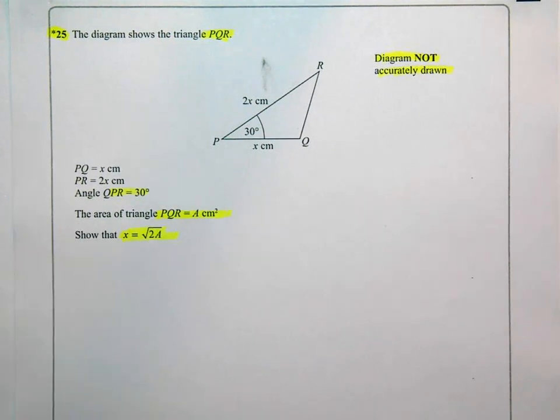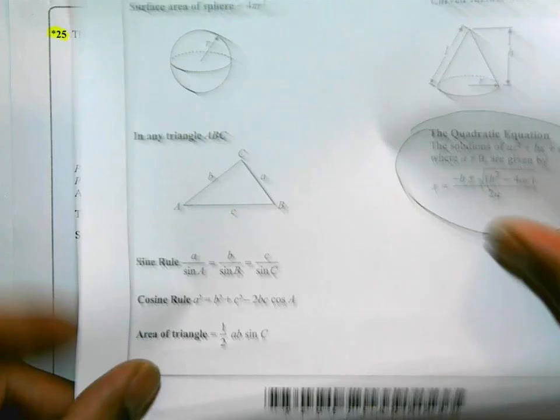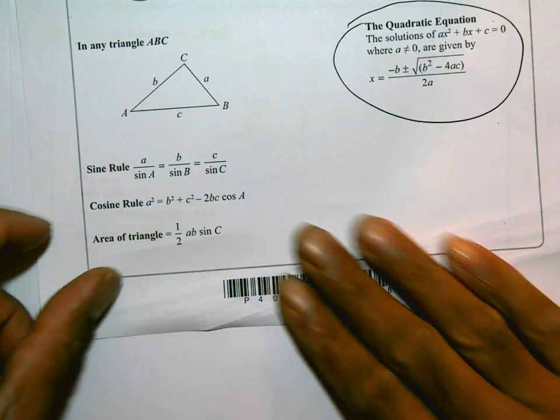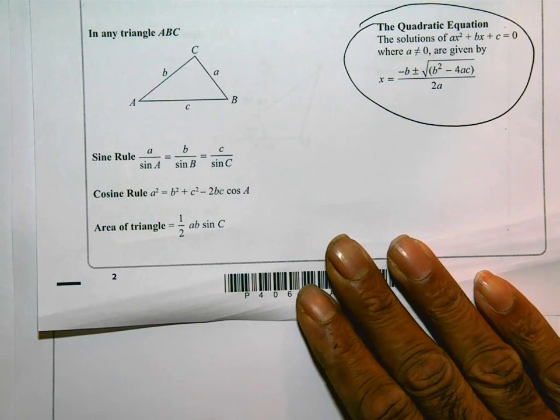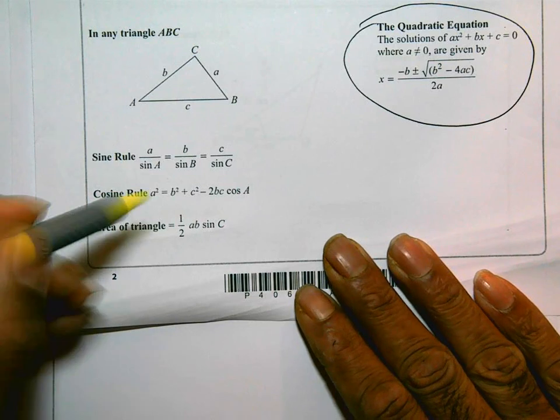So this is dealing with working out the area of a triangle. I know two sides in the triangle and the angle. And that actually means I could look to the formula sheet at the front of the exam paper. And in the formula sheet, one of the formulas that you're given is the area of a triangle.